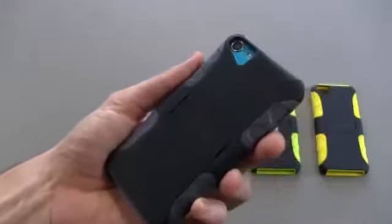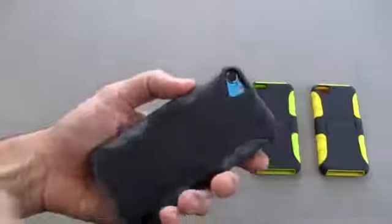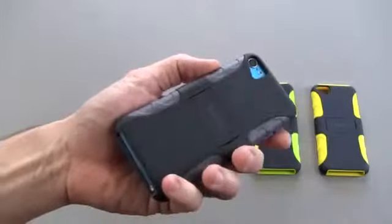And then along this side it is all enclosed as well. So that is the Poetic Lawman. It's also an easy case to remove. You just basically take this exterior shell off and then pop the rest of the case off and it comes right off.